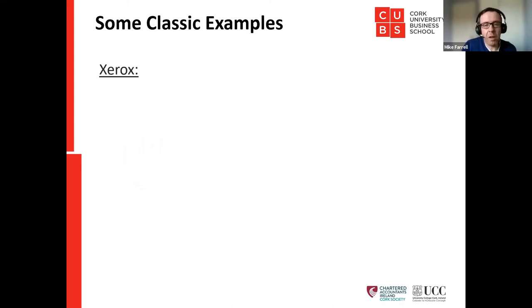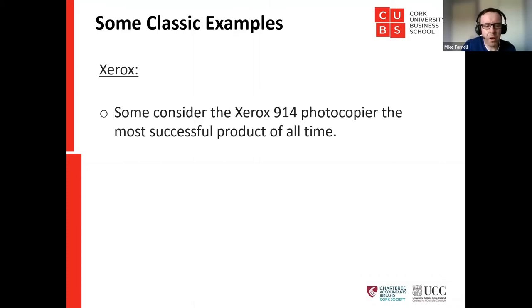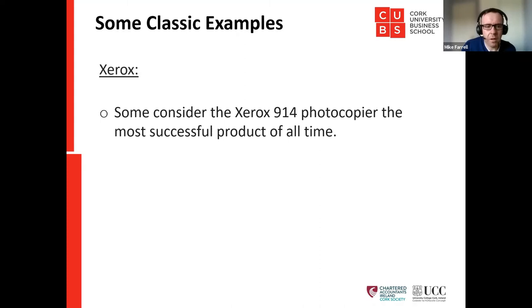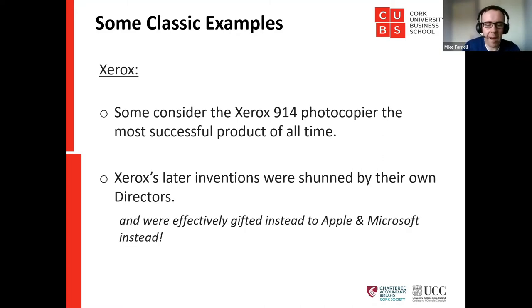The final example is Xerox — one that actually inspired my own research project. Some consider their first copier, the 914, the most successful product of all time. However, their later inventions were shelved by their own directors for being too costly or too far-fetched; they wanted to spend more time refining existing products. What's comical is they effectively gifted many of their patents to Apple and Microsoft. That's what short-termism does when long-term thinking disappears.